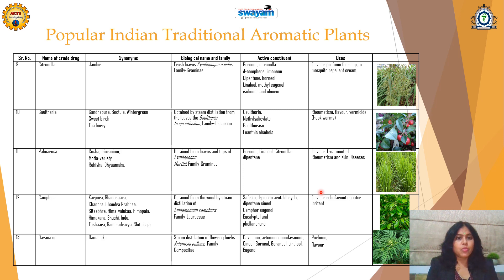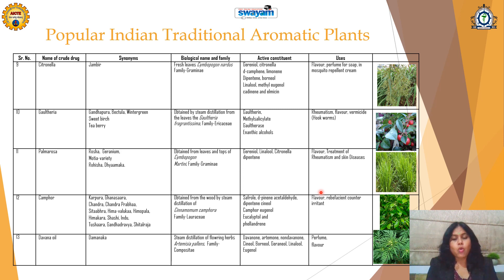Next is Palmarosa, also called Rosha Geranium, Motia, or Rosha grass, obtained from Cymbopogon martinii, Family Gramineae, which contains geraniol, linalool, and citronellal. It is a flavorant and useful in treatment of rheumatism and skin diseases. Rosha grass is also commonly used in flower bouquet preparations.